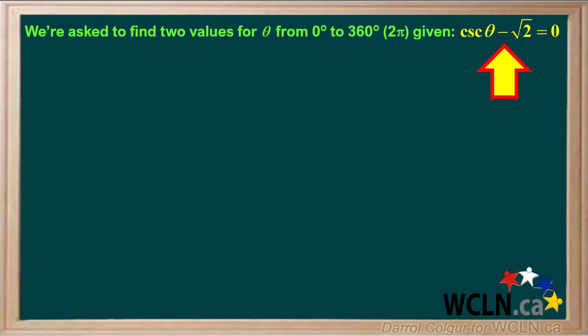We're asked to find two values for angle theta from 0 degrees to 360 degrees, or 2 pi radians, given this equation.